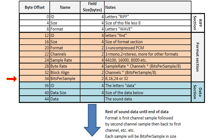Bits per sample should only be one of the four values shown, and our program will look at this to ensure it retrieves the correct number of bytes per sample. For simplicity, our code will only support 16-bit data for today's episode. The last section should be the largest part of the file as it contains the actual digitized sound. The ID at offset 36 must be the letters DATA. Data size is the size of the WAV data, and knowing this along with the sample rate and bits per sample, we can calculate the running time in seconds. At offset 44, the actual data starts.